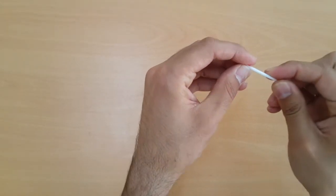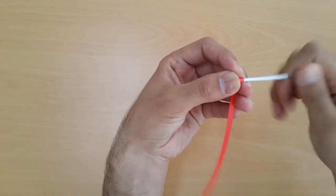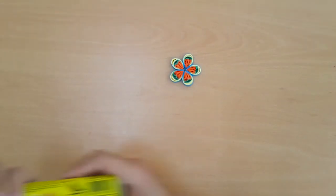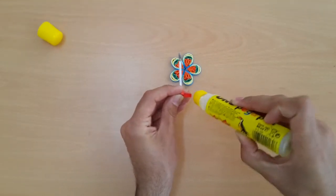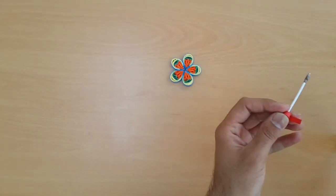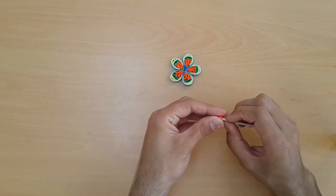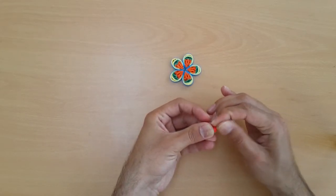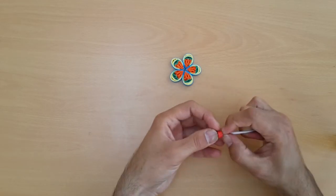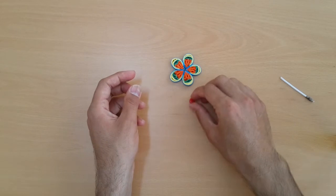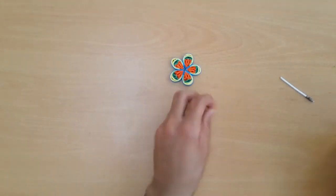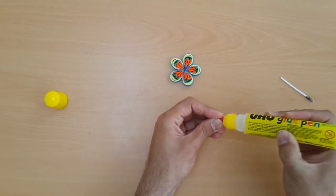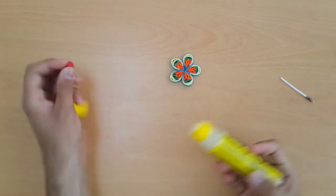Now friends, we are making a coil to put in the middle of this flower, so we will put it in the middle of this flower.